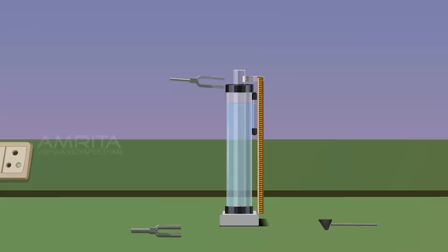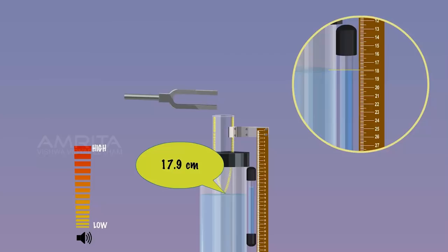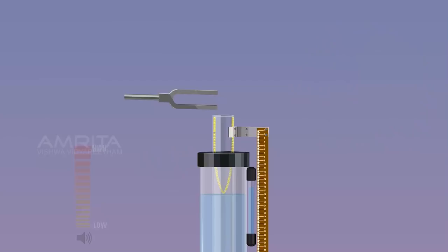Take the tuning fork of frequency 480 Hz and place it horizontally over the open end of the tube. Excite it by striking it with a rubber hammer. It starts vibrating. Raise the tube slowly along with the tuning fork. Stop raising the tube when the maximum sound is heard. Note the length of the air column at that position. Record the first resonating length L1 in the tabular column.